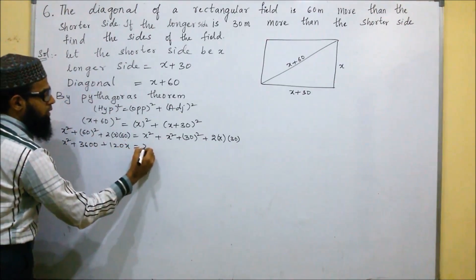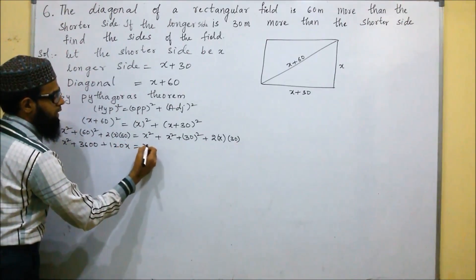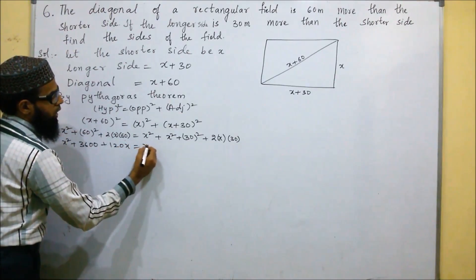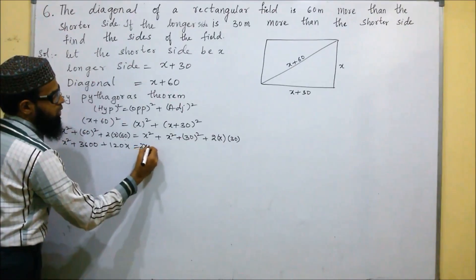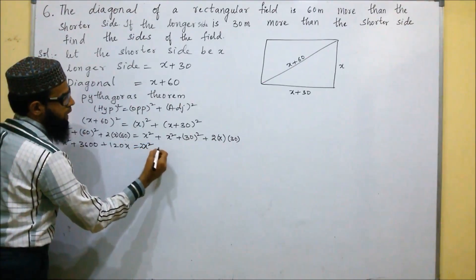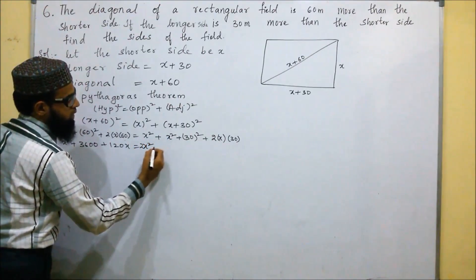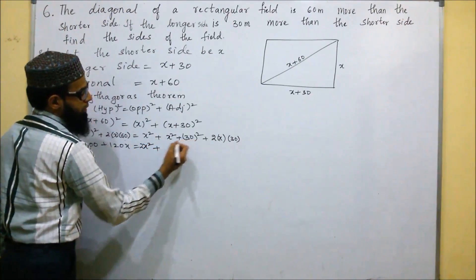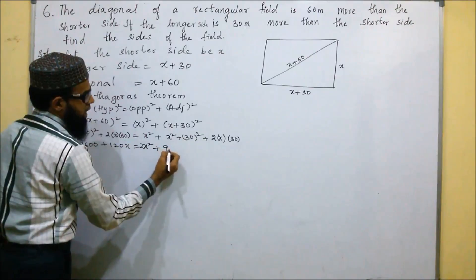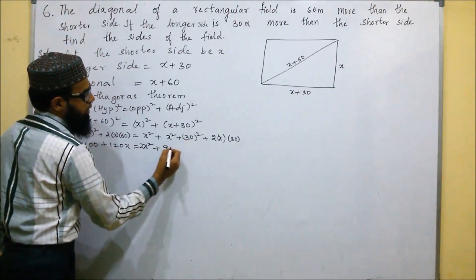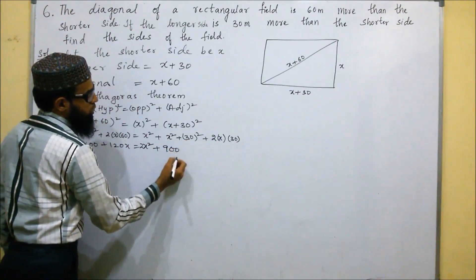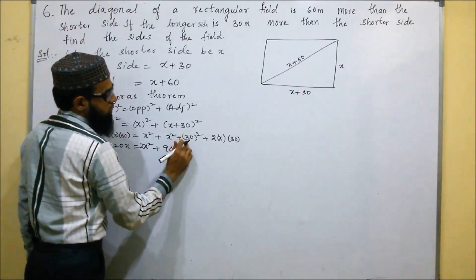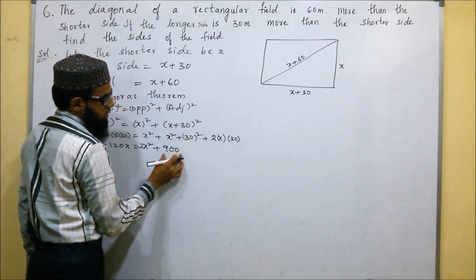We can cancel x² from both sides, or write it as 2x². So we have x² + 120x + 3600 on the left, and 2x² + 60x + 900 on the right.